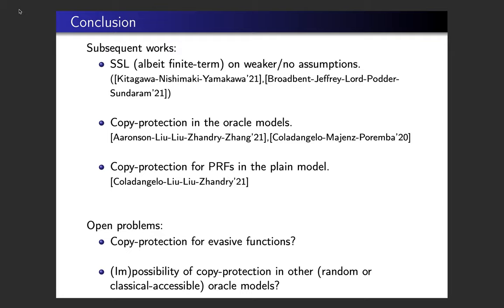There are subsequent works on SSL appearing at TCC, constructing SSL for different classes of functions from weaker assumptions like sub-exponential QLWE or even no assumptions with weaker correctness guarantees. There was also recently a construction of copy protection for PRFs for the first time in the plain model. Open problems include how to copy-protect evasive functions in the plain model, and whether copy protection can be ruled out in other oracle models such as random or classically-accessible oracle models.